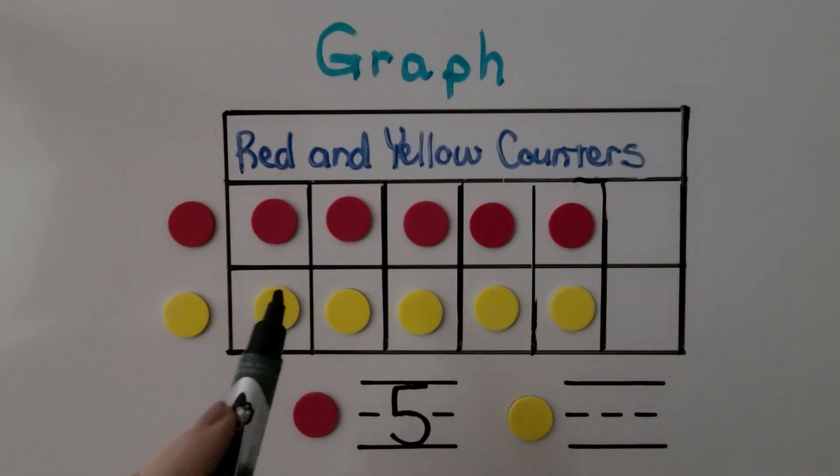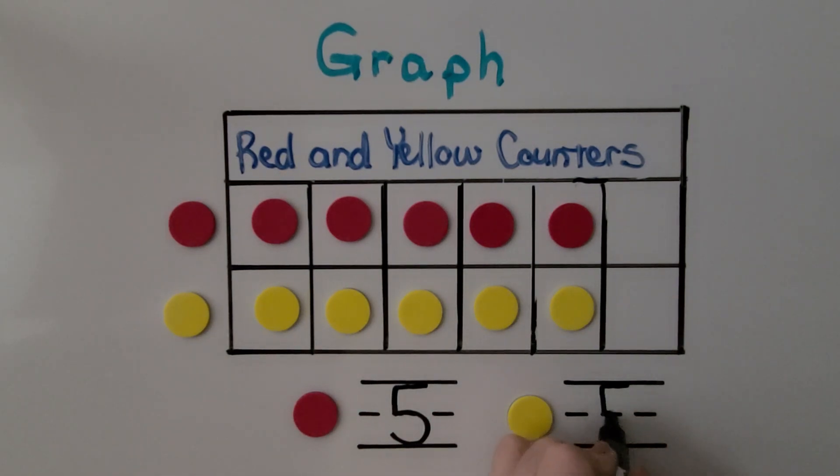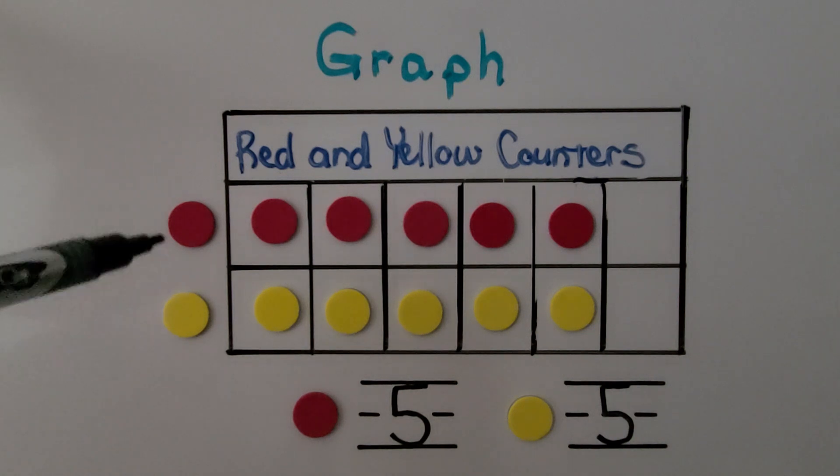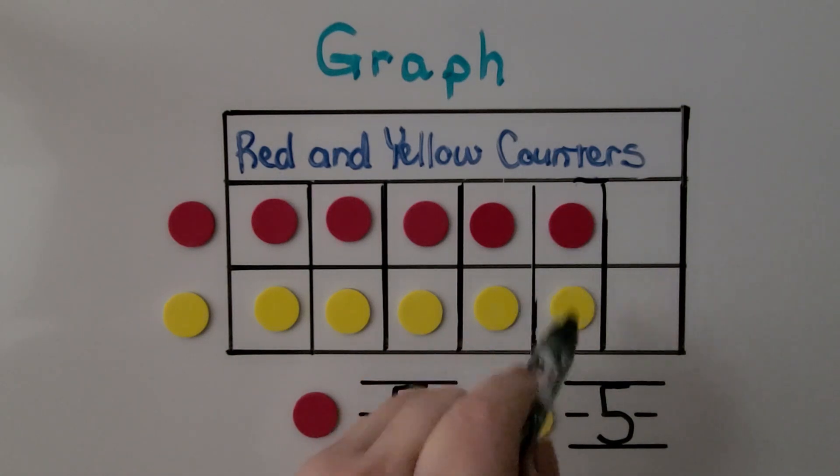For yellow, there's one, two, three, four, five. Remember, we don't count the outside labels. And we can see they both have the same number of boxes filled. They have the same number. One is not sticking out farther than the other. There are five red and five yellow. It's the same number.